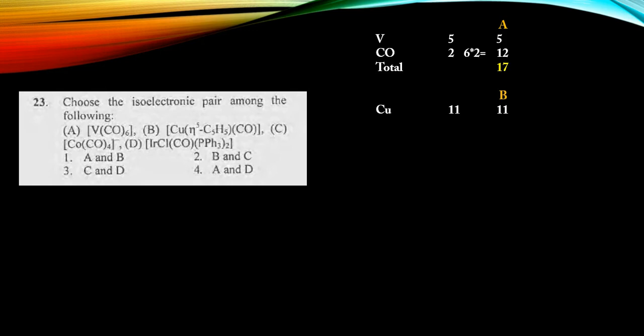For B, copper is 3d¹⁰4s¹, so 11 electrons. For η⁵-C₅H₅, η⁵ has the same hapticity, so 5 electrons. For carbonyl, 2 electrons. Total is 18 electrons.